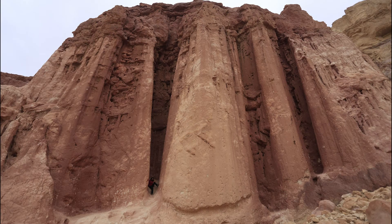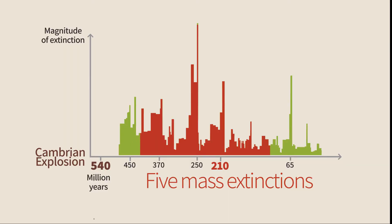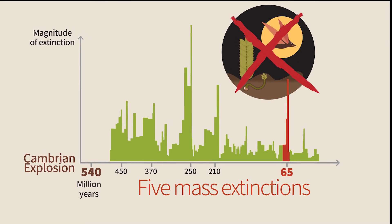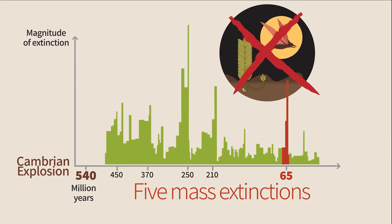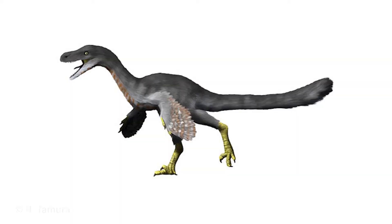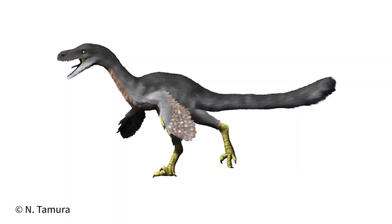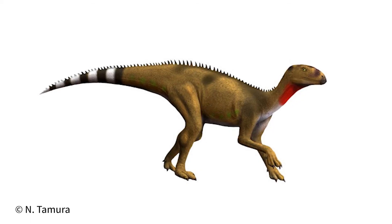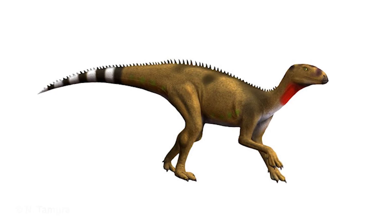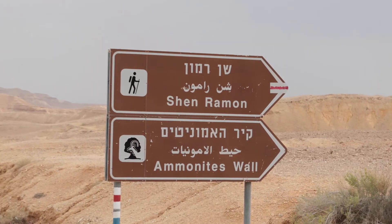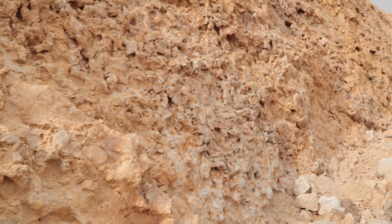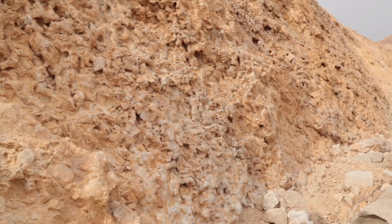The fifth, and so far last, extinction took place 65 million years ago, annihilating the dinosaurs and many other animals. The results of this extinction are well documented in the fossil record. To learn about them, we will visit now the ammonite walls south of the Ramon crater in southern Israel.